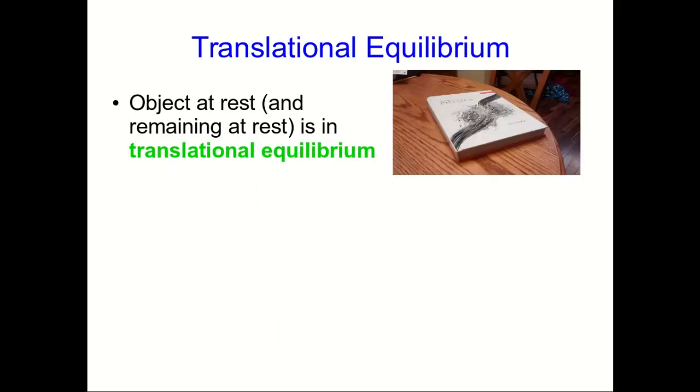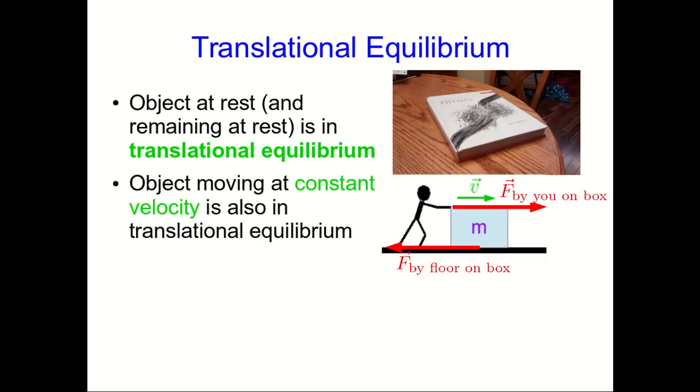A useful piece of terminology is translational equilibrium. An object at rest is in translational equilibrium, but another possibility is an object that's moving at constant velocity. Equilibrium means no change or things being in balance. And so an object in translational equilibrium is an object in unchanging translational motion, or in other words, constant velocity. And zero counts as constant.